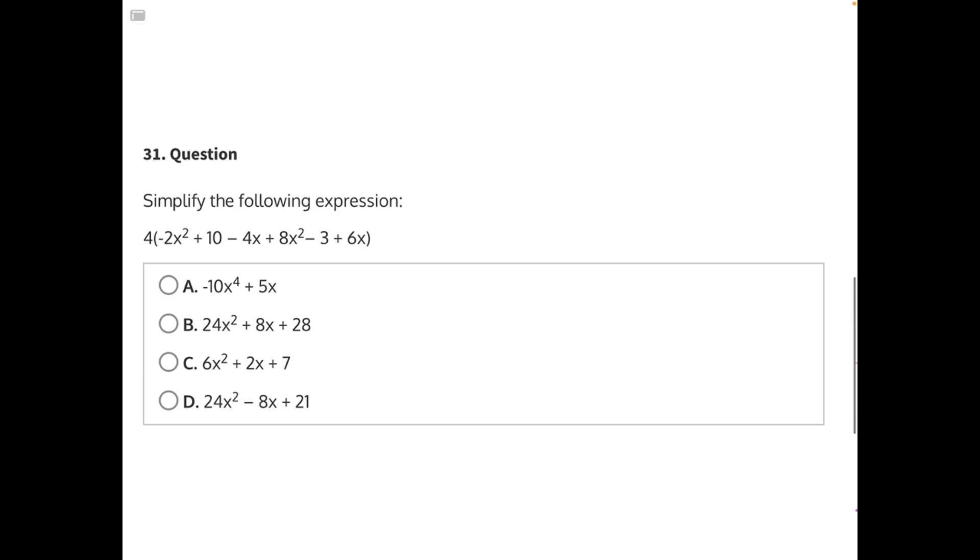To start, let's simplify everything that is within the parentheses before we start to use distributive property with this 4. To do that, let's find our like terms.